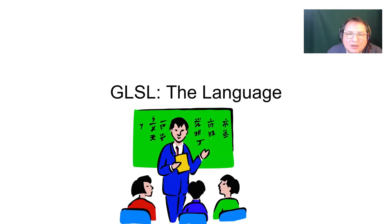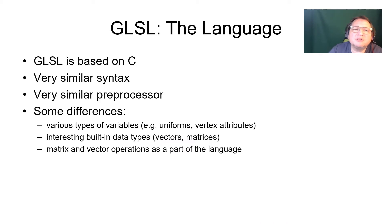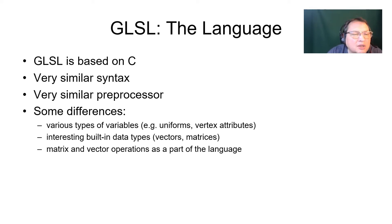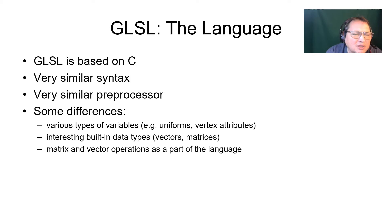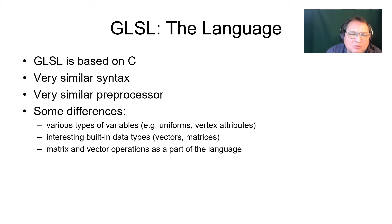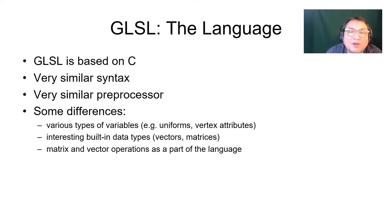GLSL, the language. It is closely based on C, which is good news because we have very similar syntax and nearly the same preprocessor. There are some differences, some quite exciting — for example, various new types of variables: uniform vertex attributes, more about that later. There are also interesting built-in data types like vectors and matrices, and quite a powerful feature: matrix and vector operations as part of the language.